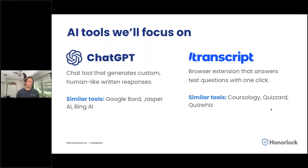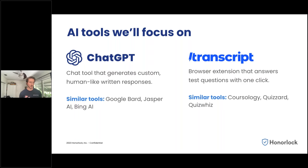To make sure we're speaking the same language, there are two different types of AI tools we're going to cover today. Things like ChatGPT, which are essentially chatbots — some similar tools would be Google Bard, Jasper, and Bing AI.